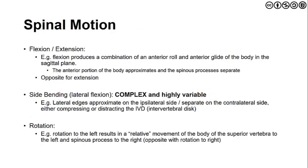Spinal motion exists in four areas. Flexion and extension occur in the sagittal plane: anteriorly the body approximates and the spinous processes separate with flexion, with the opposite occurring in extension. Lateral flexion is complex and variable depending on whether we are in the cervical, thoracic, or lumbar spine — the lateral edges approximate, and the uncinate processes and facet orientation affect the degree of side bending. Rotation is a relative movement of the body, and coupled motion varies by spinal region — it may be ipsilateral, contralateral, or a mix thereof.